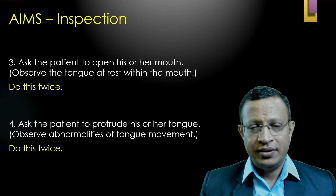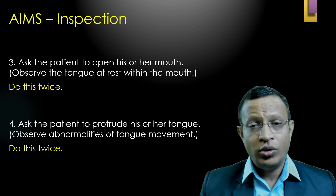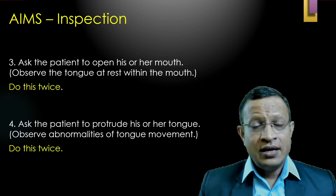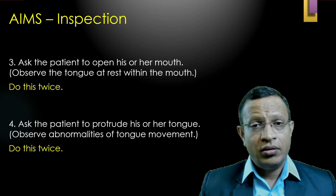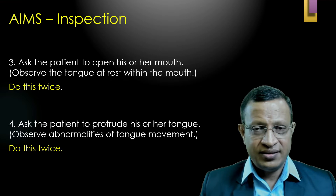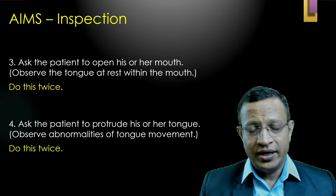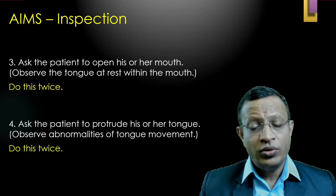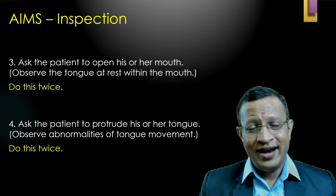Moving to step three: give instruction to the patient — when I give an instruction, you will hold that position for 10 seconds and I will observe, then repeat once more. In step three, ask the patient to open his mouth and observe the tongue for any fasciculation or movements, holding for 10 seconds; then repeat step three. Moving to step four: ask the patient to protrude his tongue, observe for fasciculation and abnormal movements, holding for 10 seconds; then repeat step four.